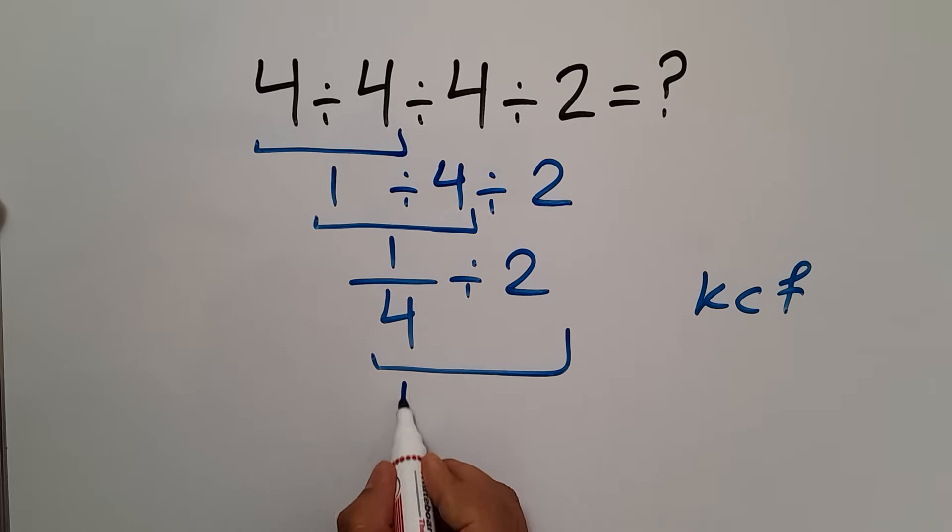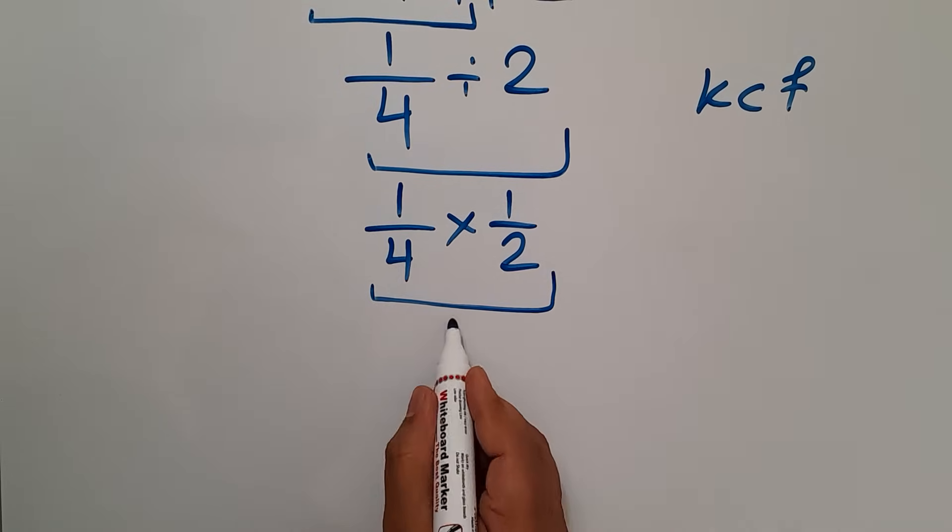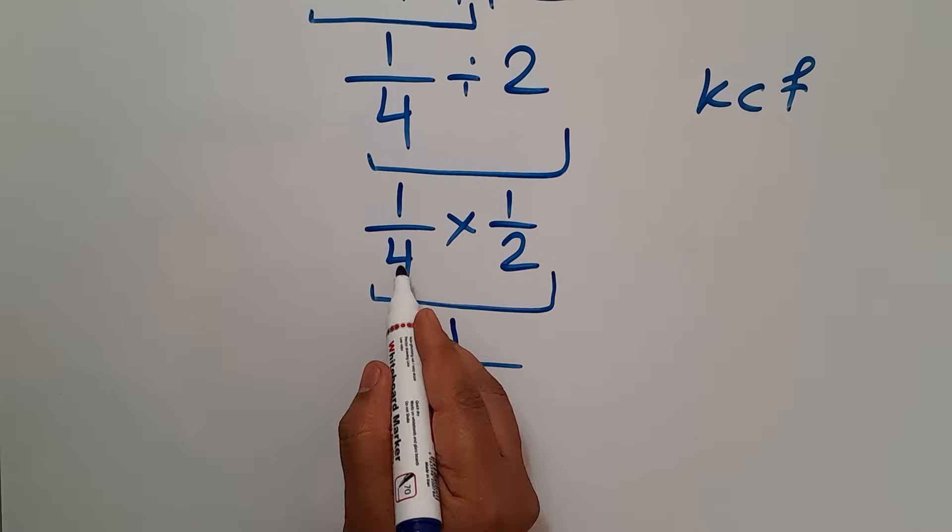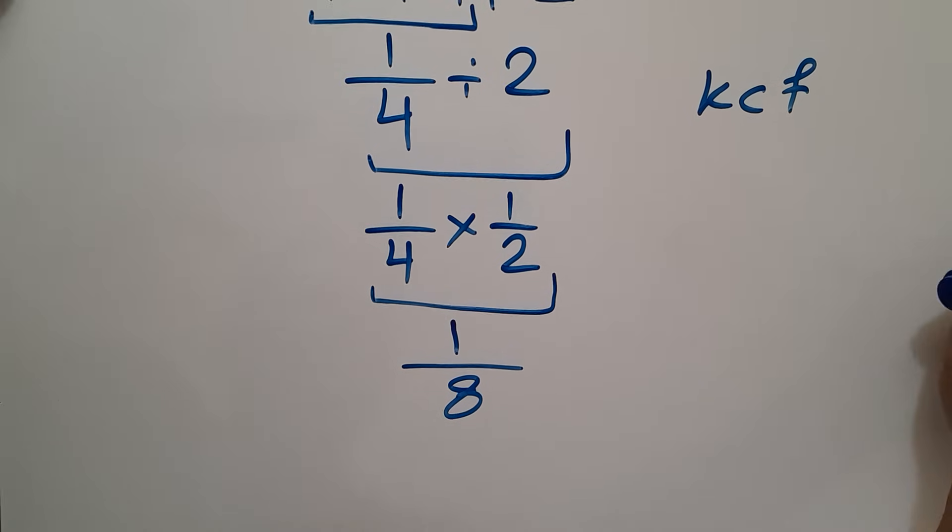We can write 1 over 4 then times 1 over 2. And this is equal to 1 times 1 gives us 1, over 4 times 2 gives us 8. So our final answer to this problem is 1 over 8.